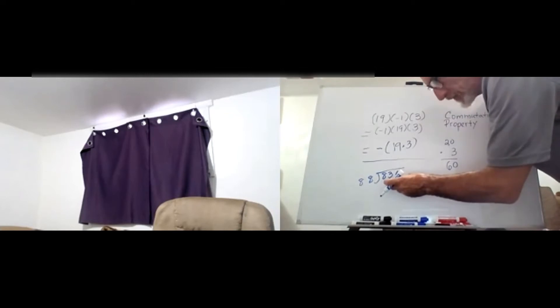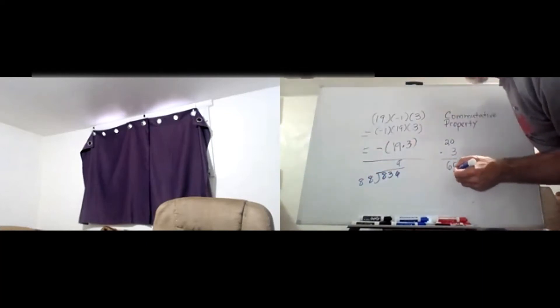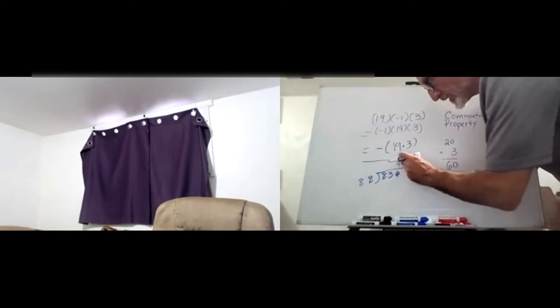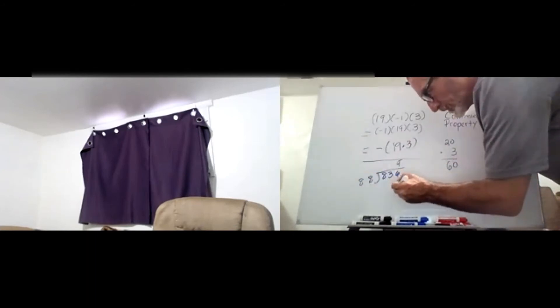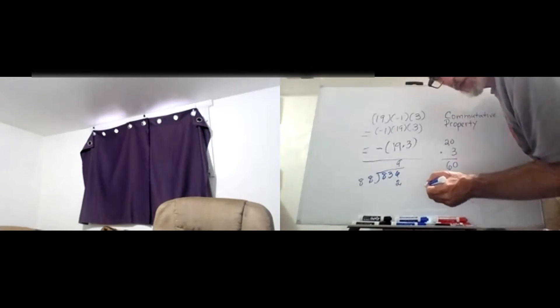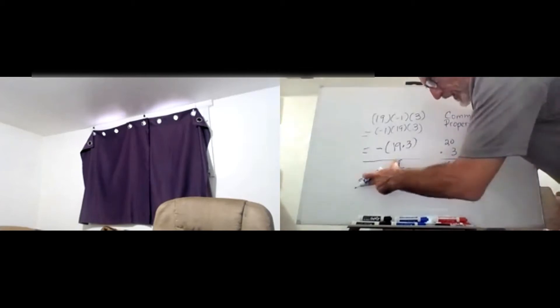9 times 8 is 72, I've got to carry a 7. And it's 9 times 8 again, 72 plus the 7 that I'm carrying is 79. I've got a remainder of 44.